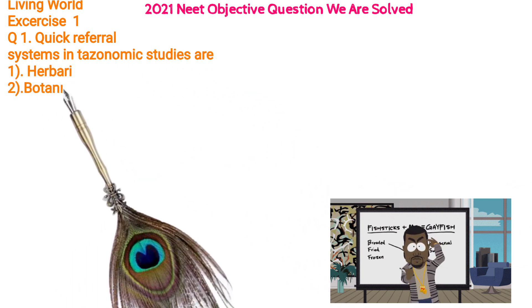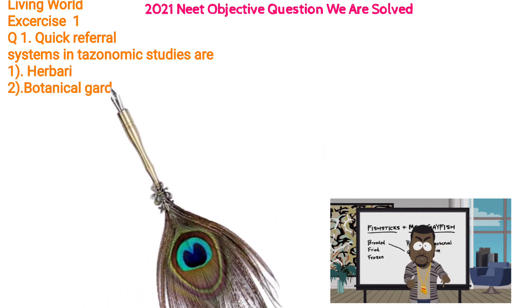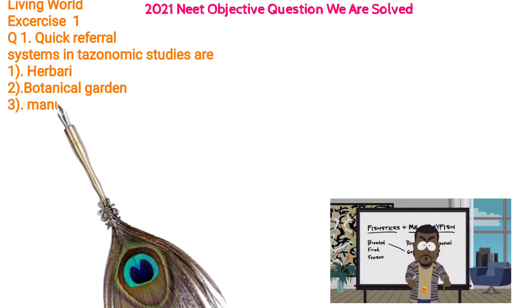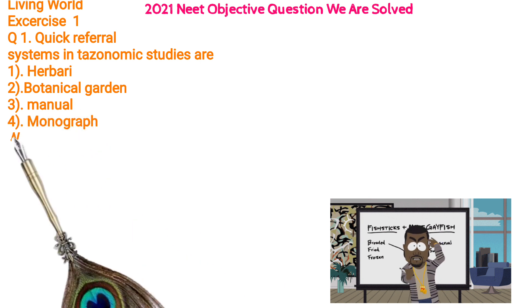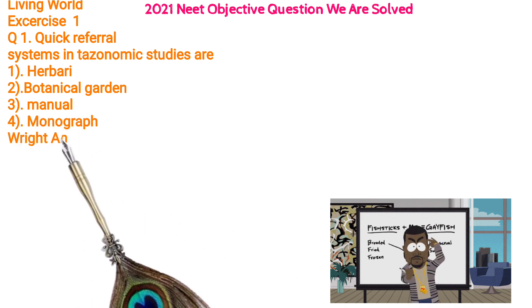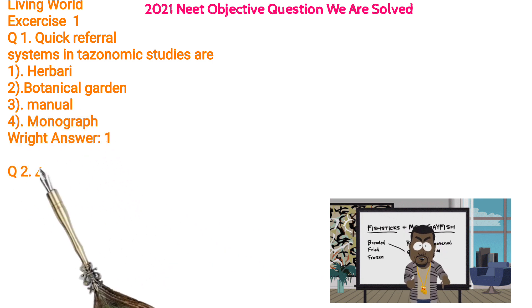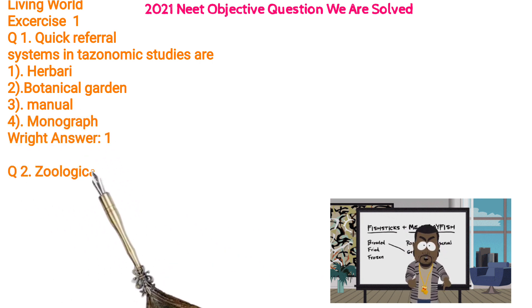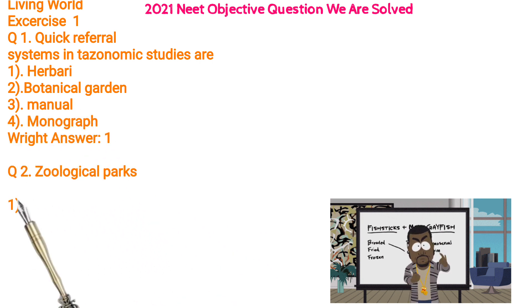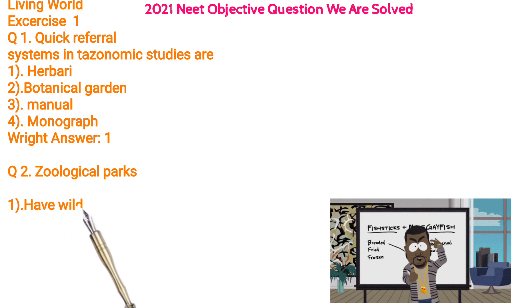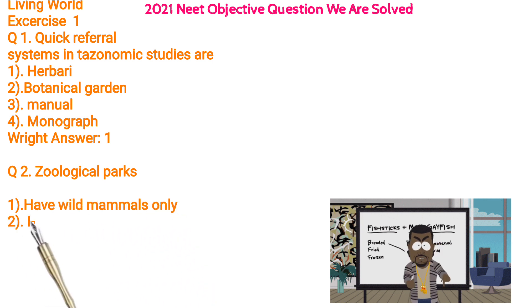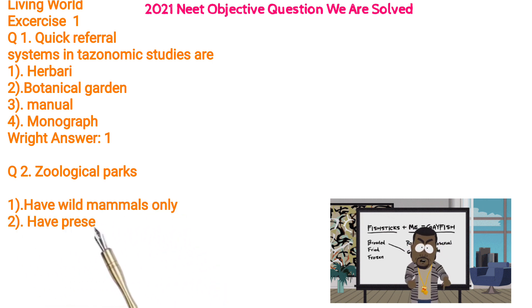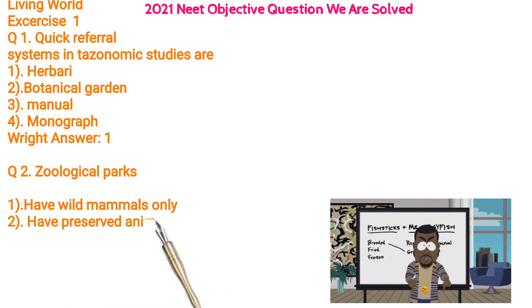2. Botanical garden. 3. Manual. 4. Monograph. Right answer: 1. Q2: Zoological parks — 1. Have wild mammals only. 2. Have preserved animal specimens. 3. Are useful in identification of animals. 4. Don't include birds.